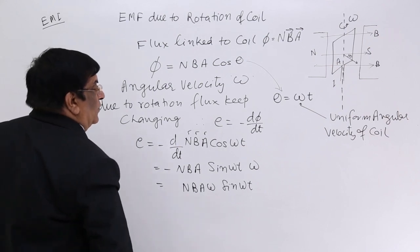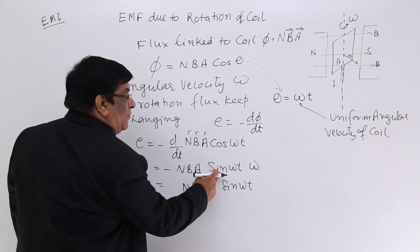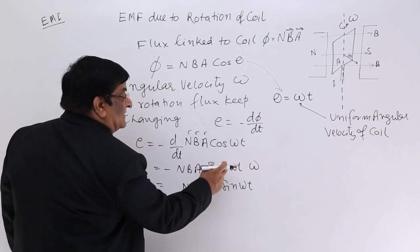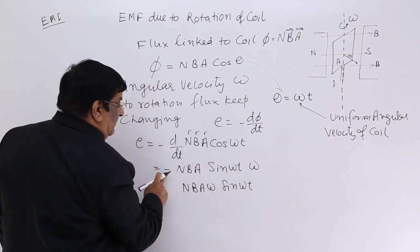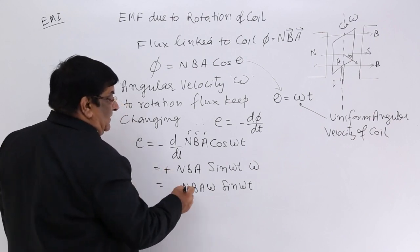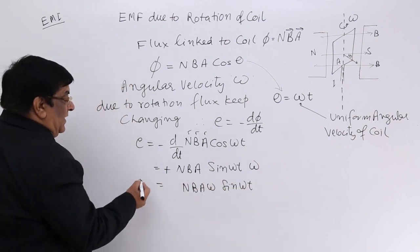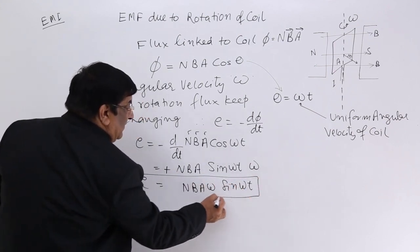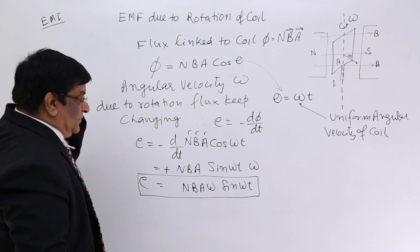So this is N, B, A, omega, sin omega t. The differentiation of cos omega t is negative sin omega t — that negative combined with the negative from the EMF formula becomes positive. So the EMF at any time is E = NBAω sin(ωt).